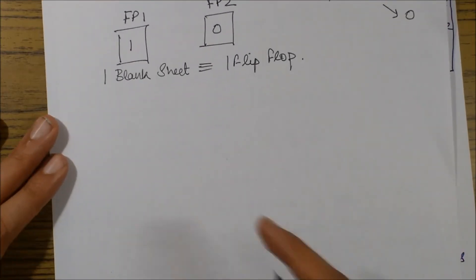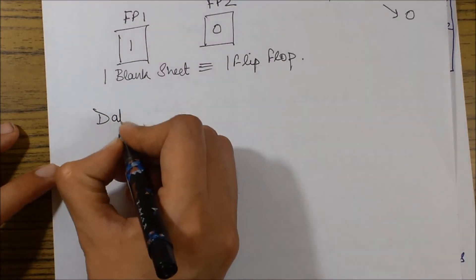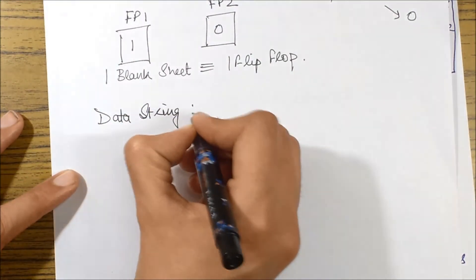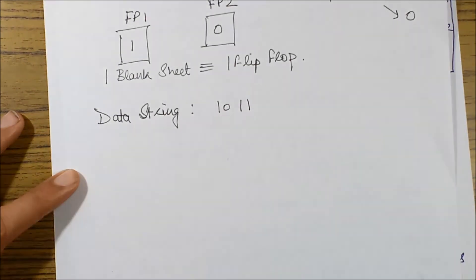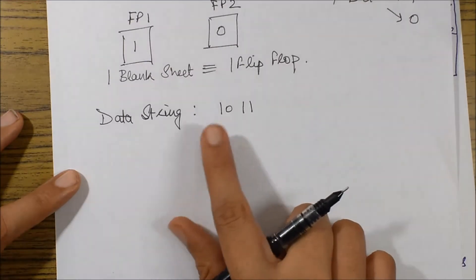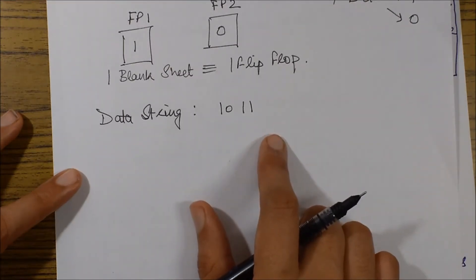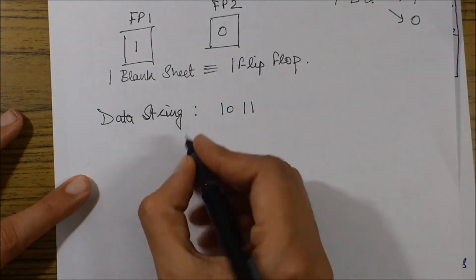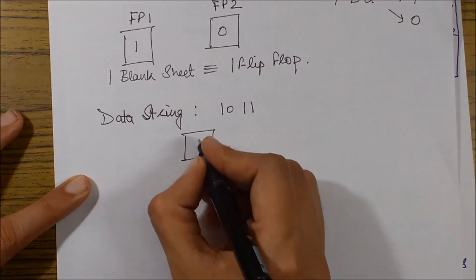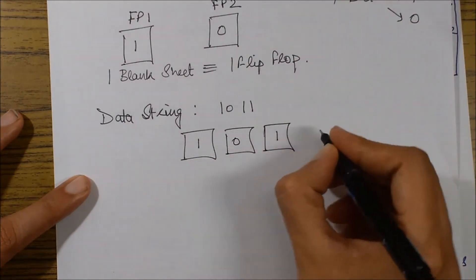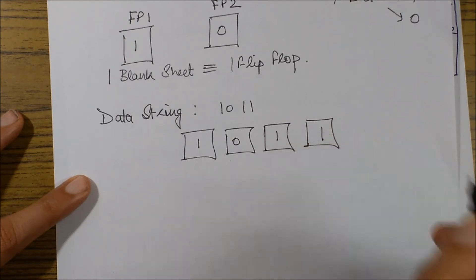If I say that my data string is 1011, this data string is only comprised of four bits. That means if I take the same analogy, I'll be needing four blank sheets for representing it. If I want to represent the same data, I'll be keeping it somewhat like this.